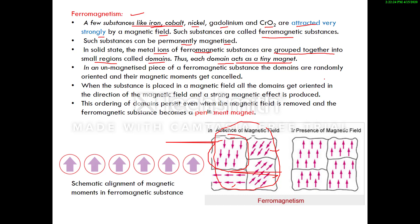Each domain behaves as a tiny magnet. In an unmagnetized ferromagnetic substance, the domains are randomly oriented and their magnetic moments cancel out, as shown in the diagram. But when the substance is placed in a magnetic field, all domains get oriented in the direction of the field and a strong magnetic effect is produced. This ordering of domains persists even after the magnetic field is removed, making the substance a permanent magnet. The magnetic moments of domains are all parallel — in the same direction.